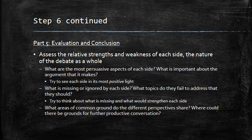Part five is your evaluation and conclusion. Assess the relative strengths and weaknesses of each side and the nature of the debate as a whole. What are the most persuasive aspects of each side? Try to see each side in its most positive light — what do we really learn from each? What is missing or ignored by each side — what topics do they fail to address that they should? What would strengthen their argument if they had it? And finally, what areas of common ground do the different perspectives share? Where could there be grounds for further productive conversation? Are there things they agree on, or issues that if investigated might bring them closer together?